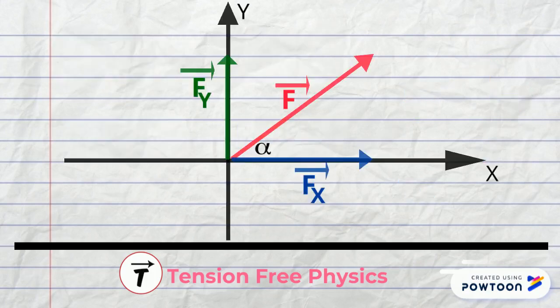Sometimes you are given the angle beta instead of alpha. Then we apply the same rules to find the components of f.